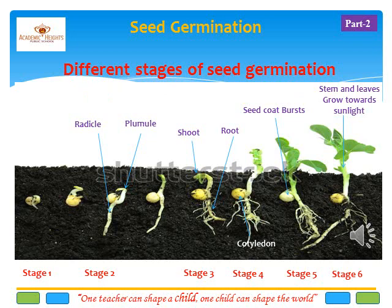Slide 13. In this slide we will study about seed germination. Germination is the process by which the embryo of a seed grows into a younger plant. Stage 1: the seeds are scattered and ready to grow. Stage 2: the seeds begin to absorb water from the environment, and the embryo divides into two parts — plumule and radicle. Stage 3: the plumule develops into a shoot and the radicle develops into a root. Stage 4: the food required for the development of the embryo into the plant is supplied by the cotyledon.